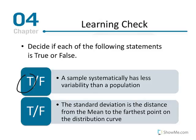True or false: the standard deviation is the distance from the mean to the farthest point of the distribution curve. That is false. Standard deviation represents the average deviation between the furthest and closest points. When estimating standard deviation, we consider the score furthest from the mean and the score closest to the mean, then average those distances to get the estimated standard deviation. That concludes part two of chapter four, measures of variability.